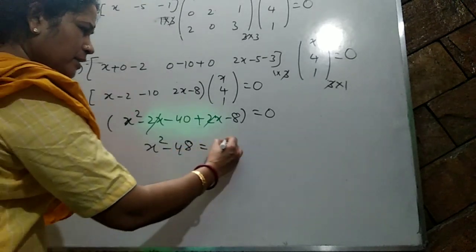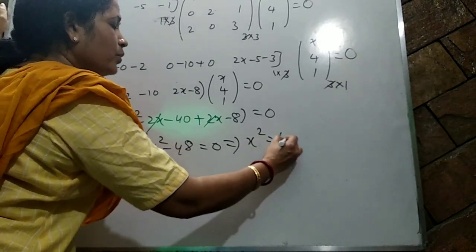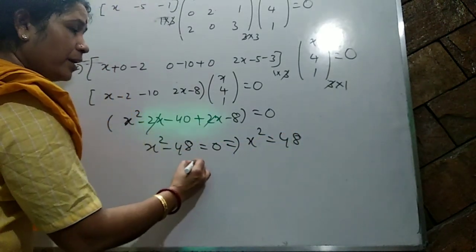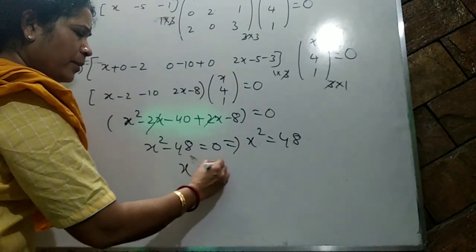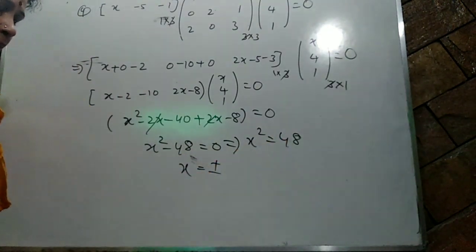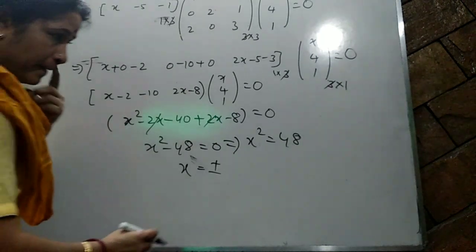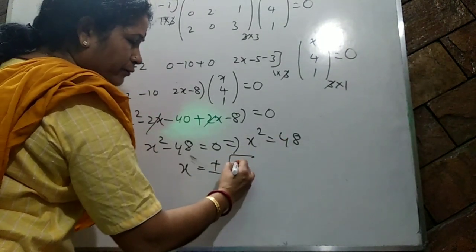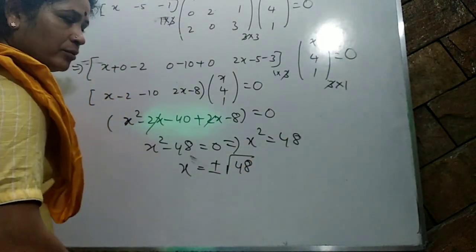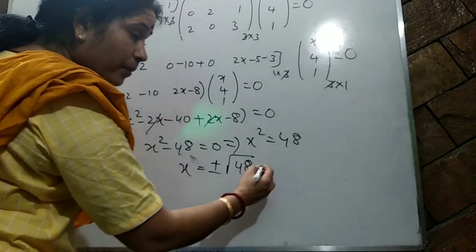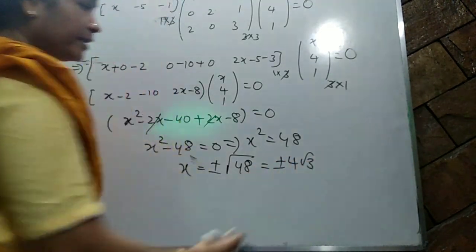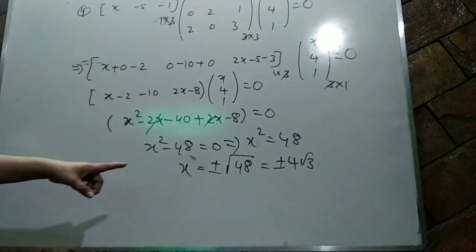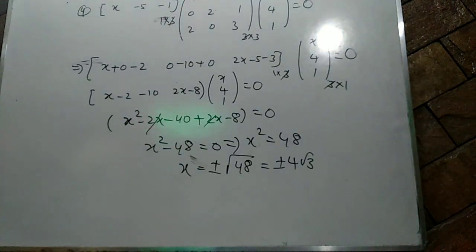This implies x² equals 48, so x equals plus or minus the square root of 48, which is plus or minus 4 root 3. Like this, you have to do question number seven for homework.